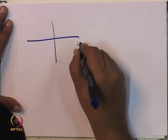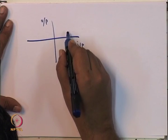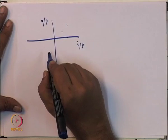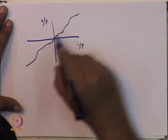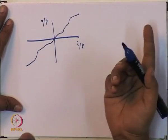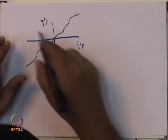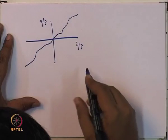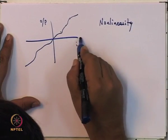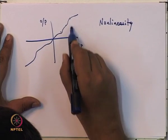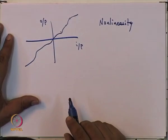If you have a memoryless nonlinearity, one way to characterize it is by a graph: for any given input you can read the output, and connecting those points gives a curve. If this curve is a straight line through the origin the system is linear, otherwise it is nonlinear. For any given input, the output is determined by that curve — it is like a lookup table.